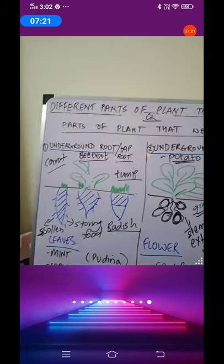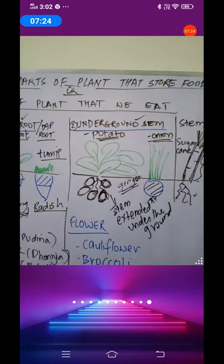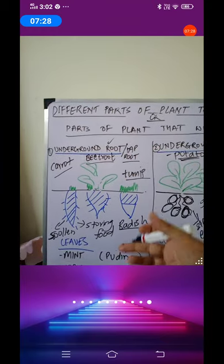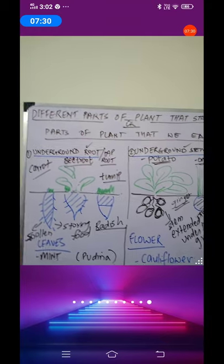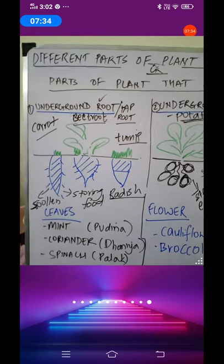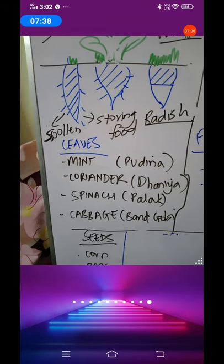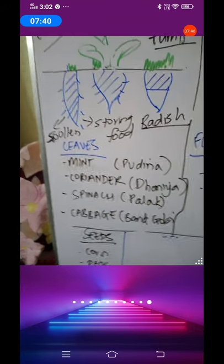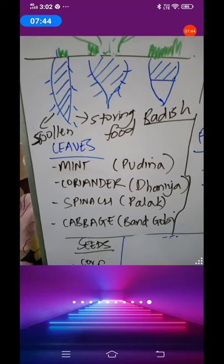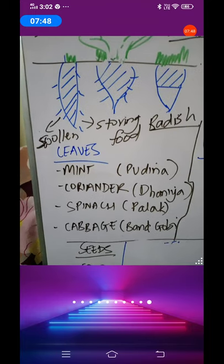What other parts can we eat? We have seen we can eat the underground root and the underground stem. Do plants store food in the leaves? Yes. You remember your mom making dhaniya and pudina chutney? This dhaniya pudina is nothing but the leaves of the plant which your mom uses to make chutney.